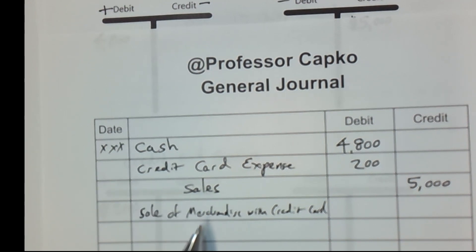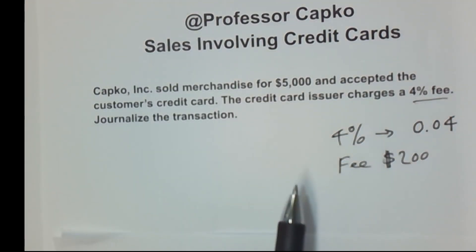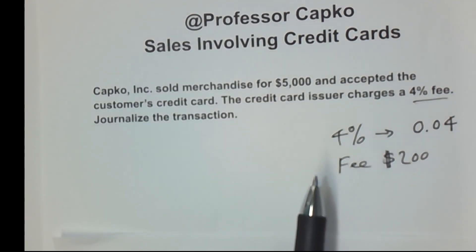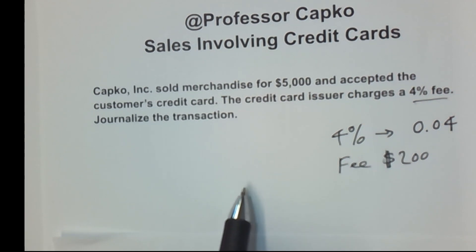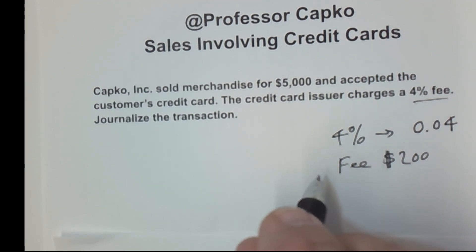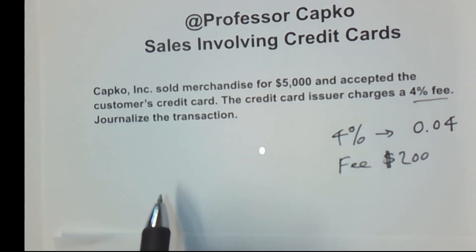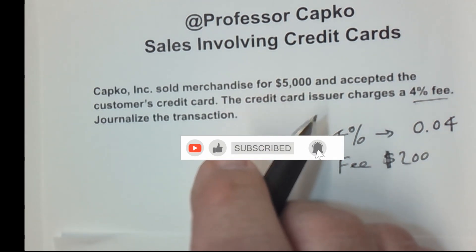That is how you journalize a transaction of a sale of merchandise using a credit card. A sale of services would be handled pretty much exactly the same, and I could do a video on that if you'd like. That's all I have for you today. You can help support this channel by becoming a member — click the join button below. If you haven't already, please subscribe and hit that notification bell so you never miss a video. Thank you.